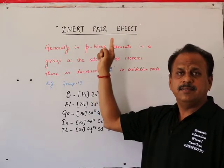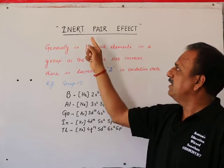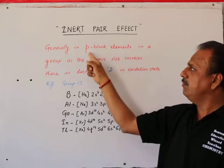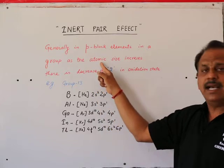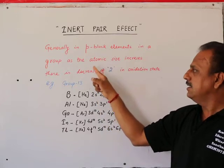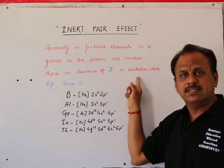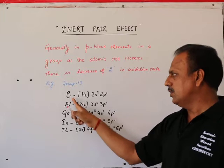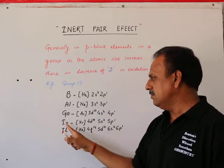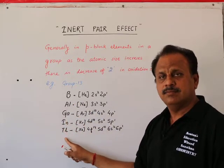The inert pair effect in P-block elements: as the atomic size increases, there is a decrease of 2 in oxidation state. For example, in Group 13 - boron, aluminum, gallium, indium, and thallium.